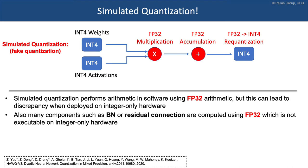Simulated quantization, also known as fake quantization, works as follows: the parameters of the model are stored with reduced precision, and the activations are also quantized. But when performing the arithmetic — the multiplication and accumulation — FP32 is used. This means the model footprint is reduced, but we cannot benefit from faster integer logic.